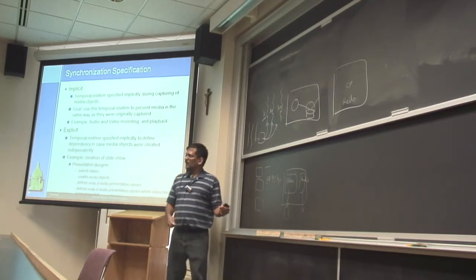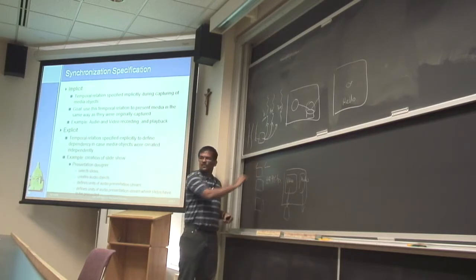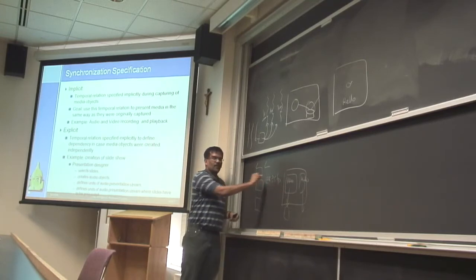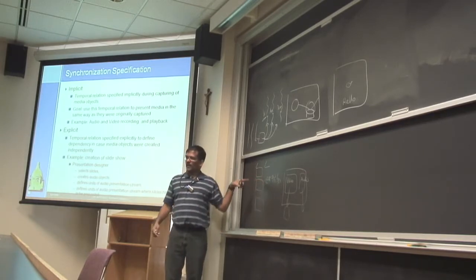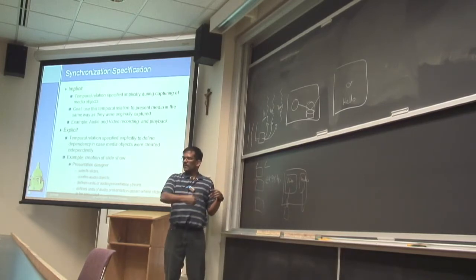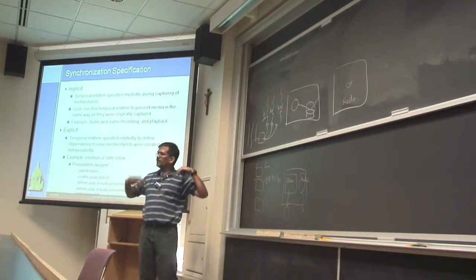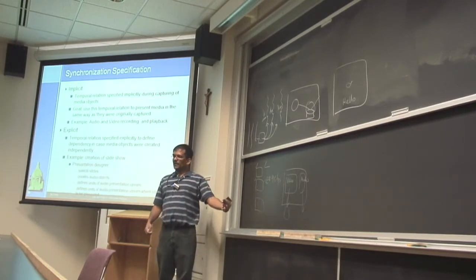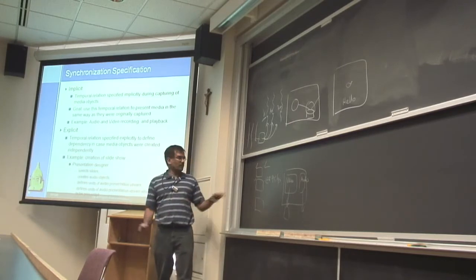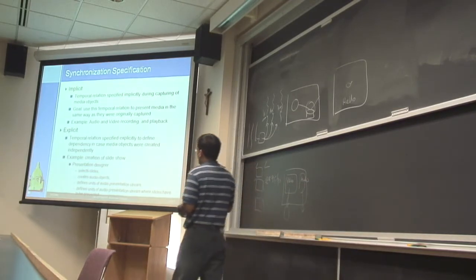It would be nice if when you're capturing this stuff you could tell that this frame is related to this audio — somehow you tag these two. Then you're no longer dependent on the fact that these are supposed to happen at 30 frames per second, but you're synchronizing them while capturing so that even if something is lost, you know how to synchronize them back. That's the goal — if you can add this information at the capture point, you can try to maintain it throughout the system rather than calculating based on an assumed frame rate.